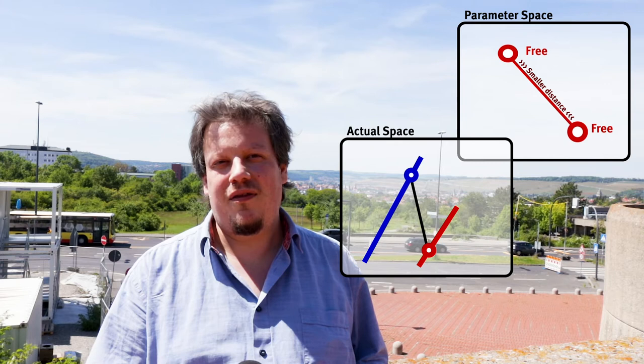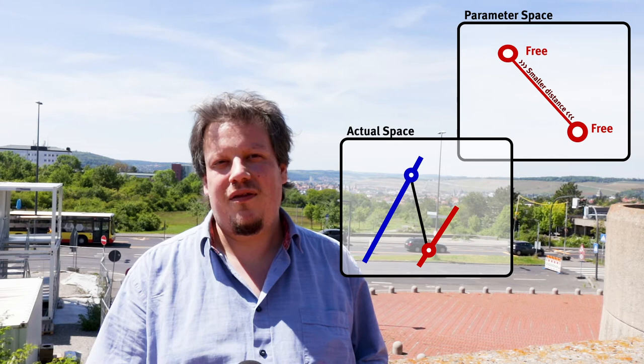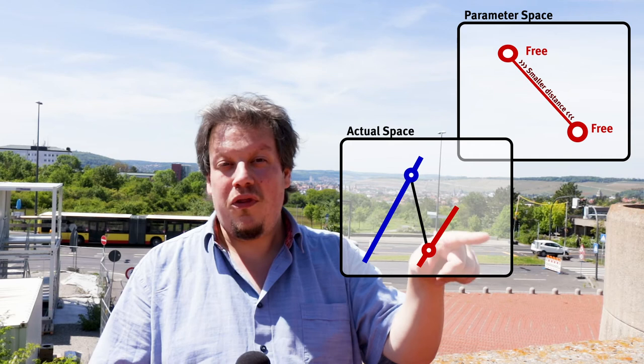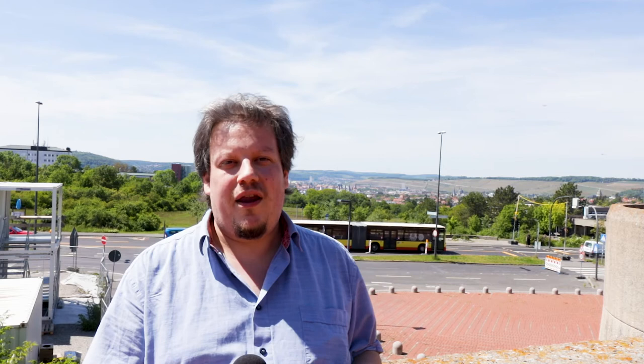So if I have two points in parameter space any linear combination of them has at most the same distance. So the free space itself is convex and this is very useful for us because then if we know that one point is free and another point is free then I can just go there.